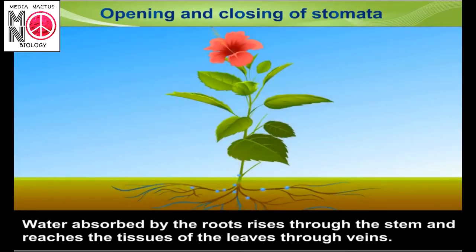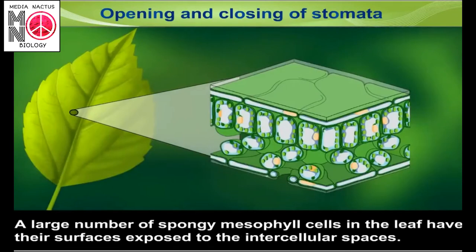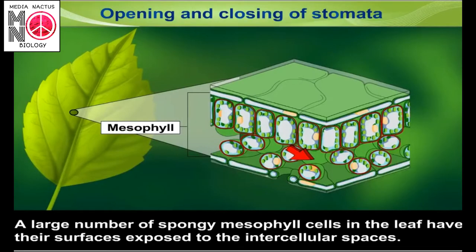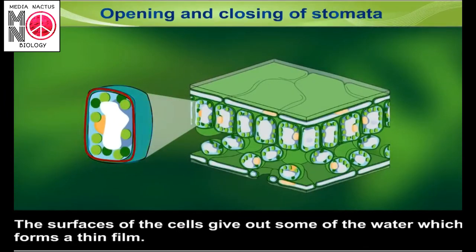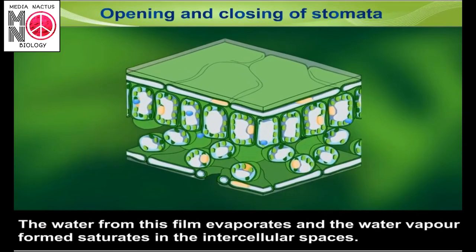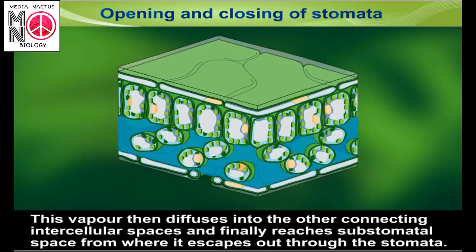Water absorbed by the roots rises through the stem and reaches the tissues of the leaves. A large number of spongy mesophyll cells in the leaf have their surfaces exposed to intercellular spaces. The cell surfaces give out some water which forms a thin film. This water evaporates and the water vapor formed saturates the intercellular spaces. This vapor then diffuses through connecting intercellular spaces and finally reaches the sub-stomatal space, from where it escapes out through the stomata.